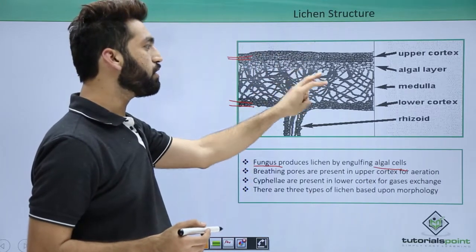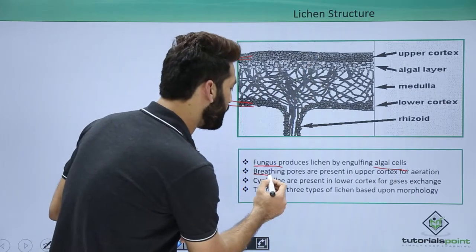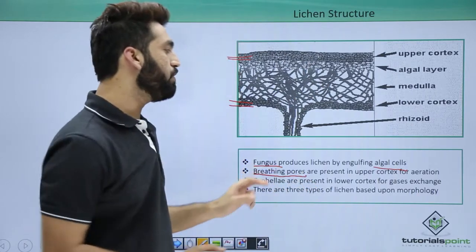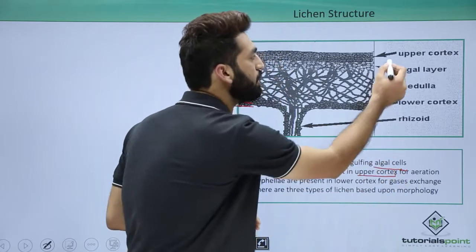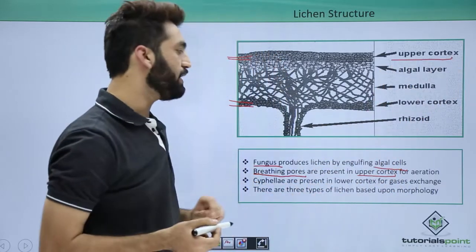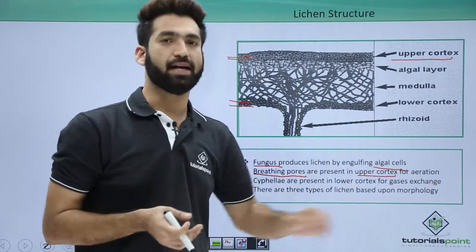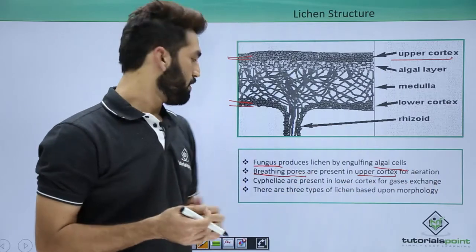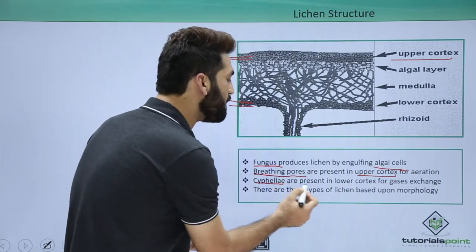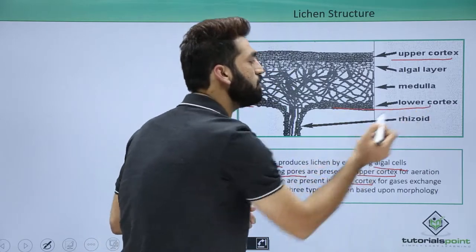There are structures present in the upper and lower cortex which you'll have to remember. Breathing pores are present in the upper cortex. Breathing pores are required for aeration. Cyphale are present in the lower cortex.